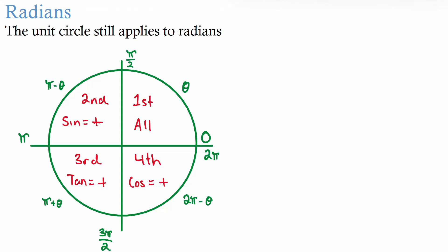In this video we're looking at radians. We've already shown you the unit circle in a previous video and that still applies for radians. Now instead of going from 0 to 90, it goes from 0 to π/2, because π is the same as 180 degrees, so 90 would be π/2. At the bottom is 3π/2, and then 2π for 360. Everything positive in the first quadrant, sine positive in the second, tan positive in the third, and cos positive in the fourth — all the same processes apply.